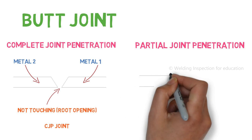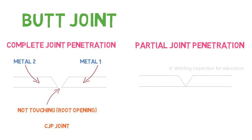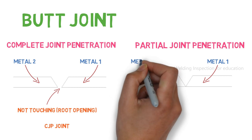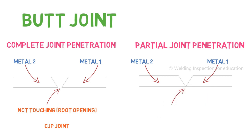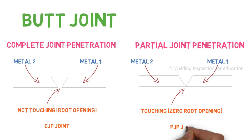Now let's talk about partial joint penetration. As you can see, metal number 1 and metal number 2 with butt joint, but now they are touching each other. So in this case there is no possibility of any open root. That is why it is considered as zero root opening, and that is why it is called partial joint penetration, PJP joint.